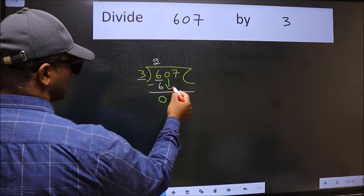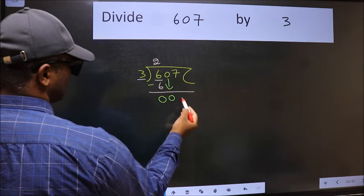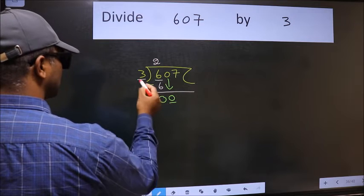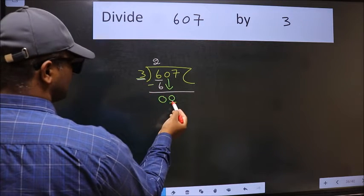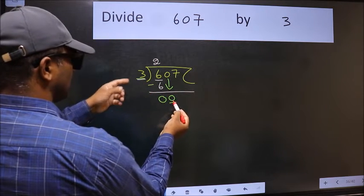After this, bring down the beside number. So 0 down. Now here we have 0 and here 3. 0 is smaller than 3.